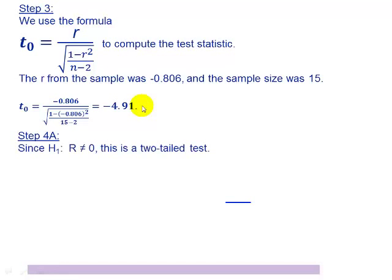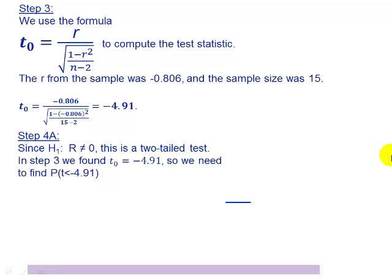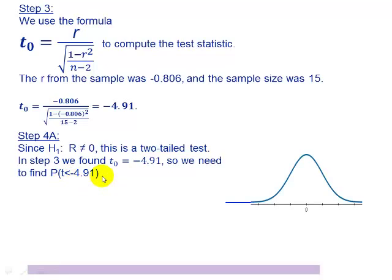The next step is to find our p-value. We had a not-equal-to in our alternative hypothesis, which makes this a two-tailed test, and our test statistic is negative 4.91. Because this is a two-tailed test and our test statistic is negative, we're looking at the left tail of our T distribution to find our p-value. Here's our T distribution with our test statistic of negative 4.91. We shade to the left of that and find the area under the curve, then multiply by two because it's a two-tailed test.